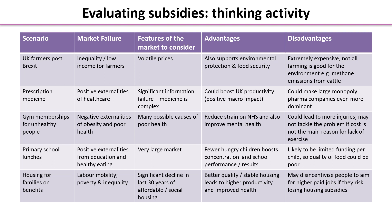First of all, let's take the scenario of UK farmers post-Brexit. The market failure here is inequality — farmers' incomes tend to be very low and very volatile, often because harvests are very volatile, which makes market prices very volatile. The advantages of supporting farmers with subsidies is that it provides farmers with a stable income so they remain in the industry producing vital food for the country, and it also supports environmental protection and food security. However, subsidies are extremely expensive because we don't know how good or bad the harvest is going to be.